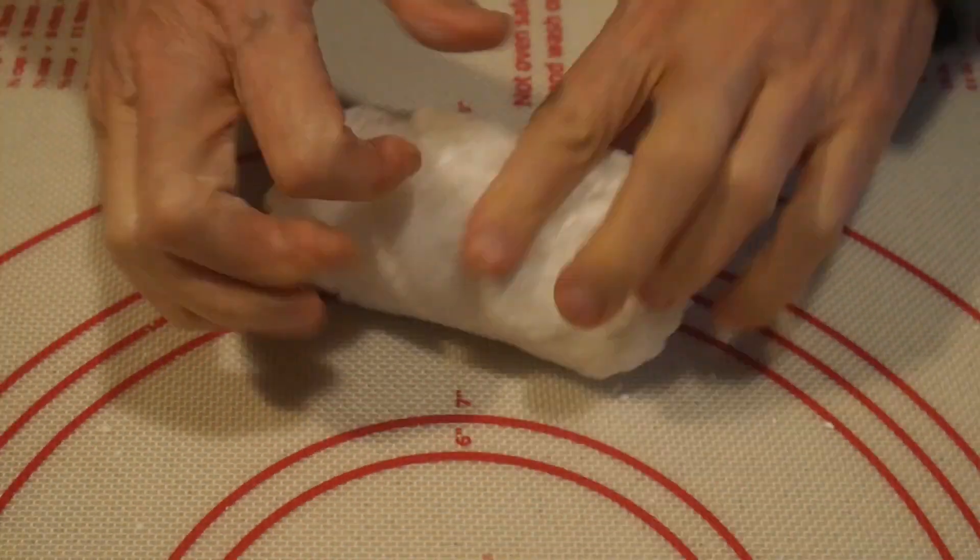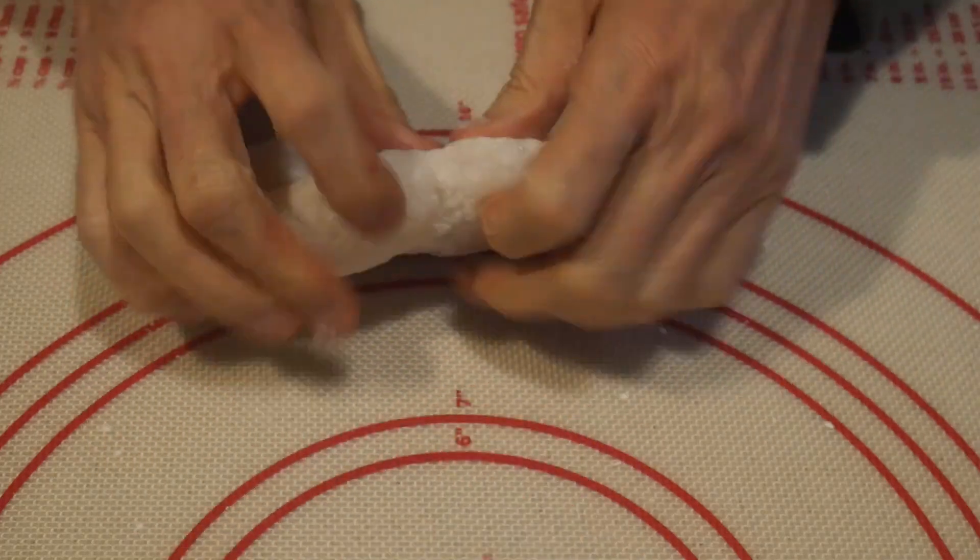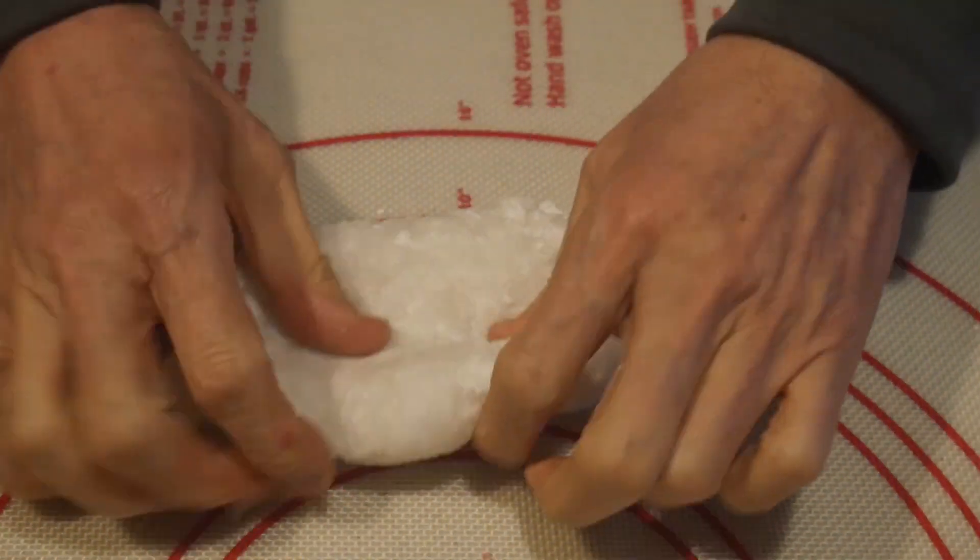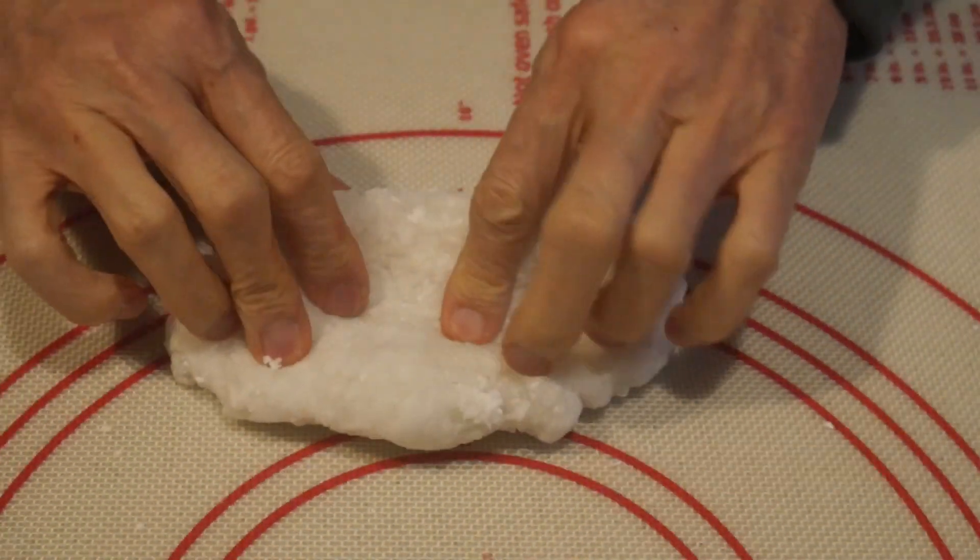When you put them onto the counter and knead them, you will find that they are very gelatinous. In fact, they're almost like play-doh.